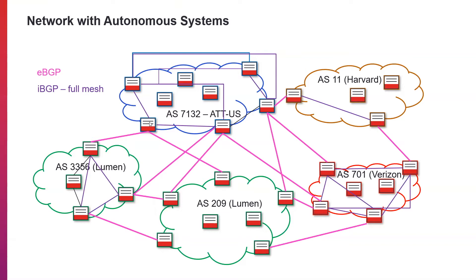The border router says: if you want to go to any of these routes that I've learned, come to me and I'll forward the traffic — so it sets next hop self on the border routers. Within a network you have a number of exterior border routers that need to communicate with each other, and the protocol they use is IBGP, internal BGP. There is a full mesh of connectivity between the border routers.